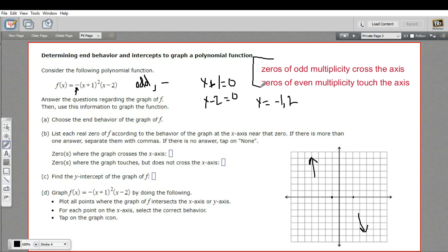Well, we use these rules right here. Zeros that have an odd multiplicity cross the axis. If they have an even multiplicity, they touch the axis.